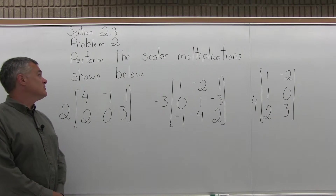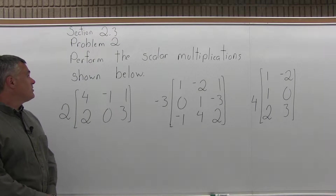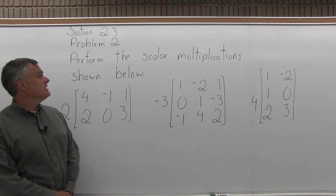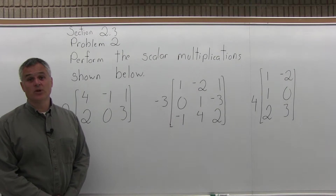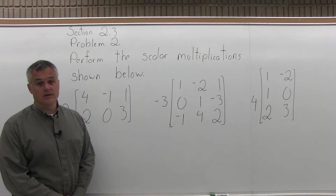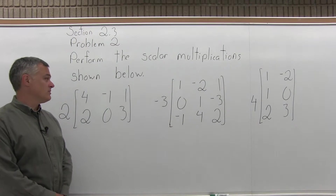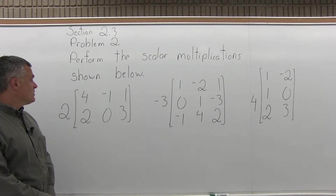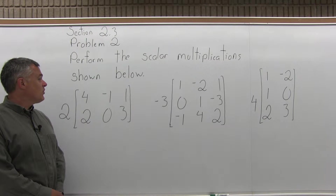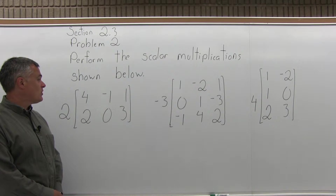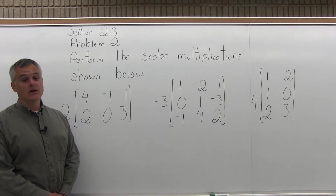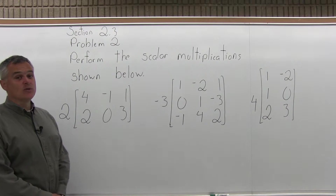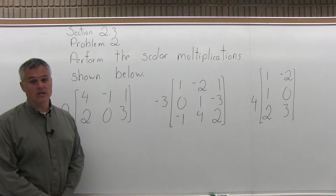This is Section 2.3, Problem number 2. It says perform the scalar multiplications shown below. There are three separate problems. The first one has a matrix with 4, negative 1, positive 1 on the top row, and then 2, 0, 3 on the second row. There's a 2 in front of that matrix.